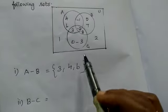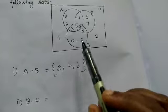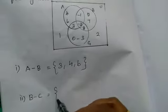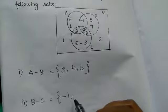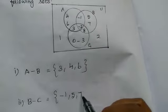Next, B difference C. In A difference B difference C: minus 1, 5, 7.